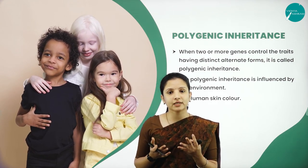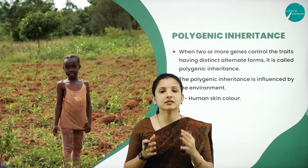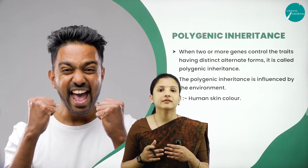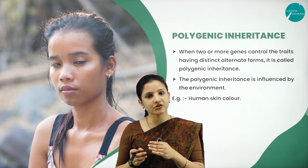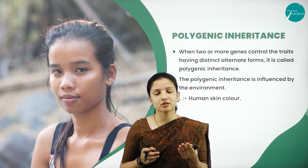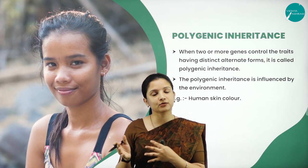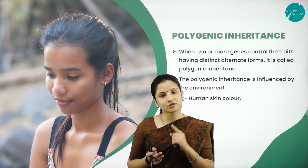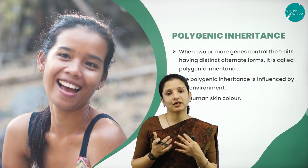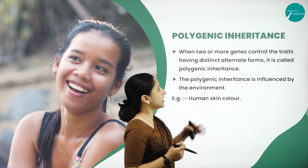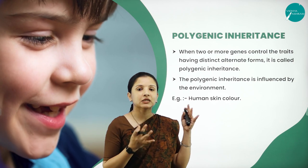In the dihybrid cross, two characters get expressed. Mendel considered the shape of the seed — round and wrinkled — and the color of the seed — yellow and green. He said these are carried exactly as they are to the progeny. But it is not always true in nature. Polygenic inheritance exists wherein more than two characters or intermediate characters can be observed in the population. When two or more genes control traits with distinct alternate forms, it is called polygenic inheritance.